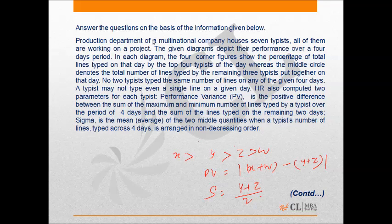Specifically, if X, Y, Z, and W are the lines typed by a typist such that X > Y > Z > W, then PV is defined as the absolute difference of (X + W) — the maximum and minimum values — and (Y + Z) — the sum of lines on the remaining two days. The second parameter, Sigma, is the mean of the two middle quantities when a typist's lines across four days are arranged in non-decreasing order — basically the average of Y and Z.